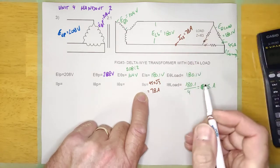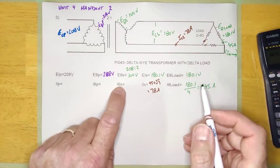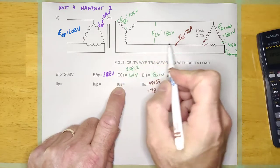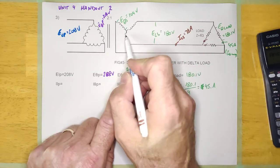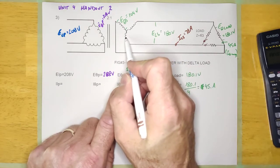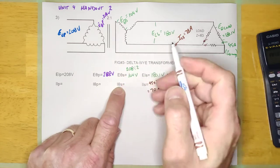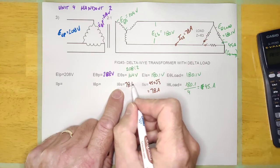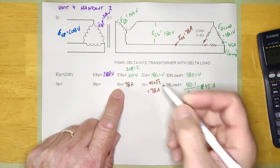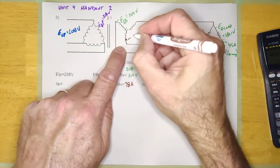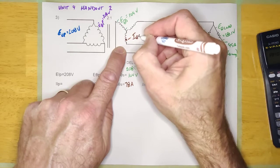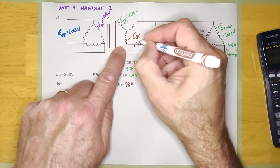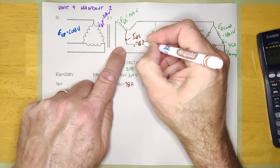Now, I-phase secondary. The current is coming from right there — that's 78 amps. If I look at this, it's Y, and it also has to be in the phase because it's in series. So I-phase secondary is going to be equal to 78 amps.